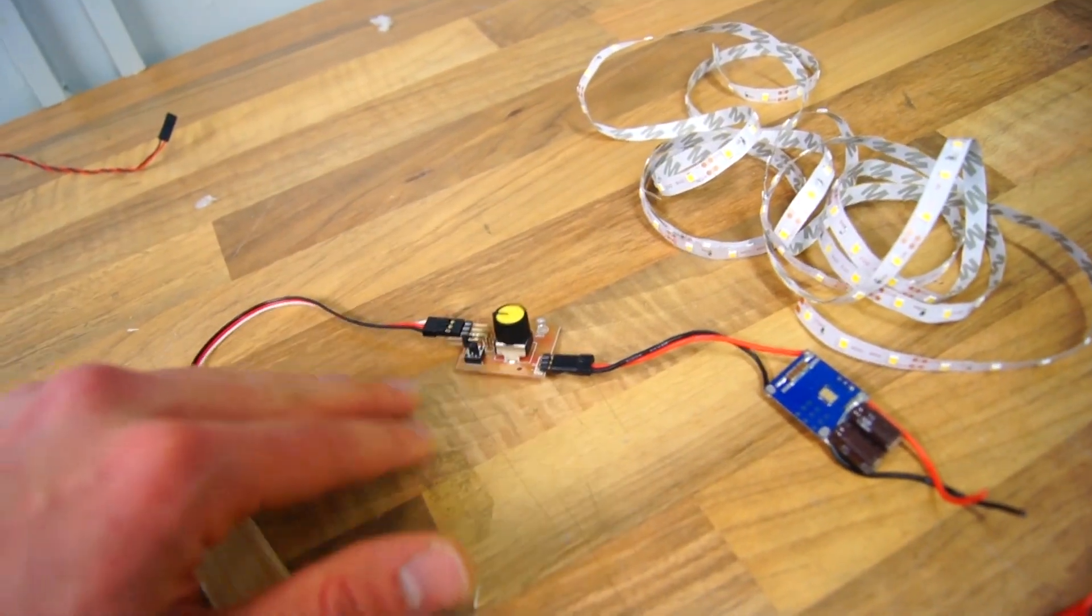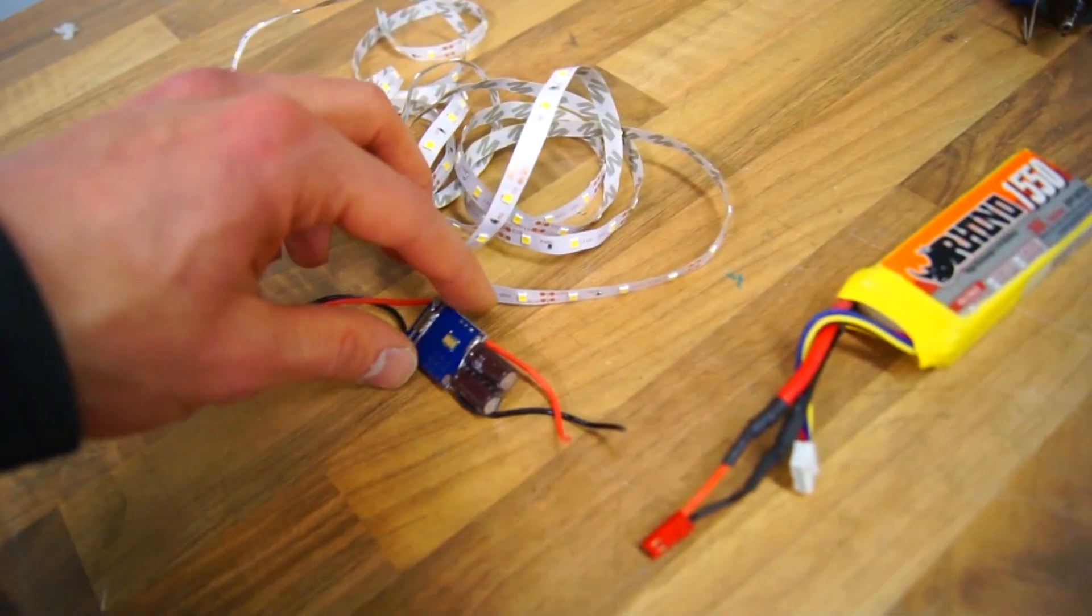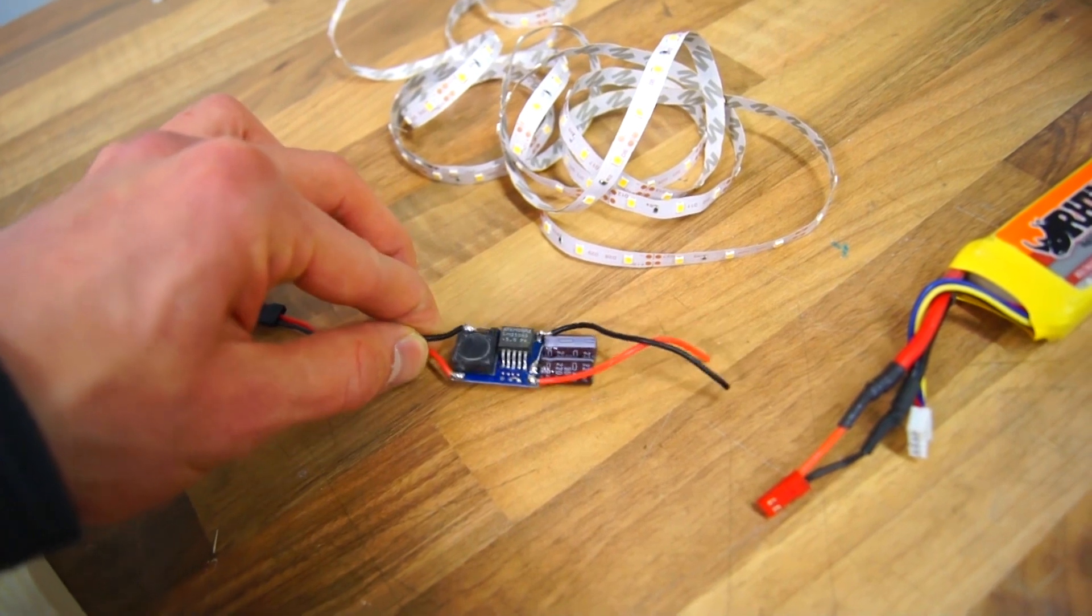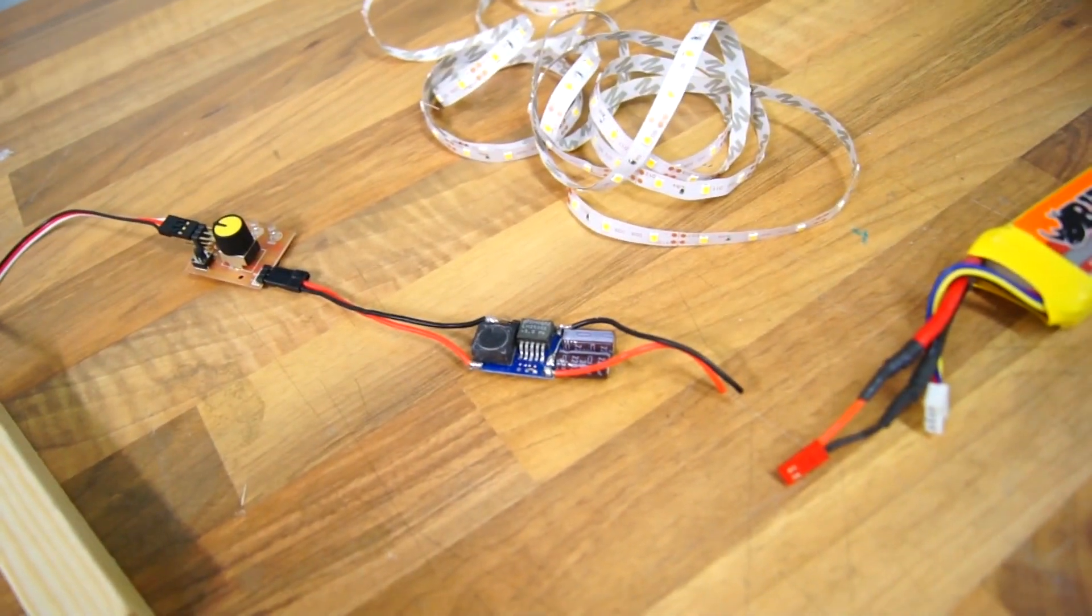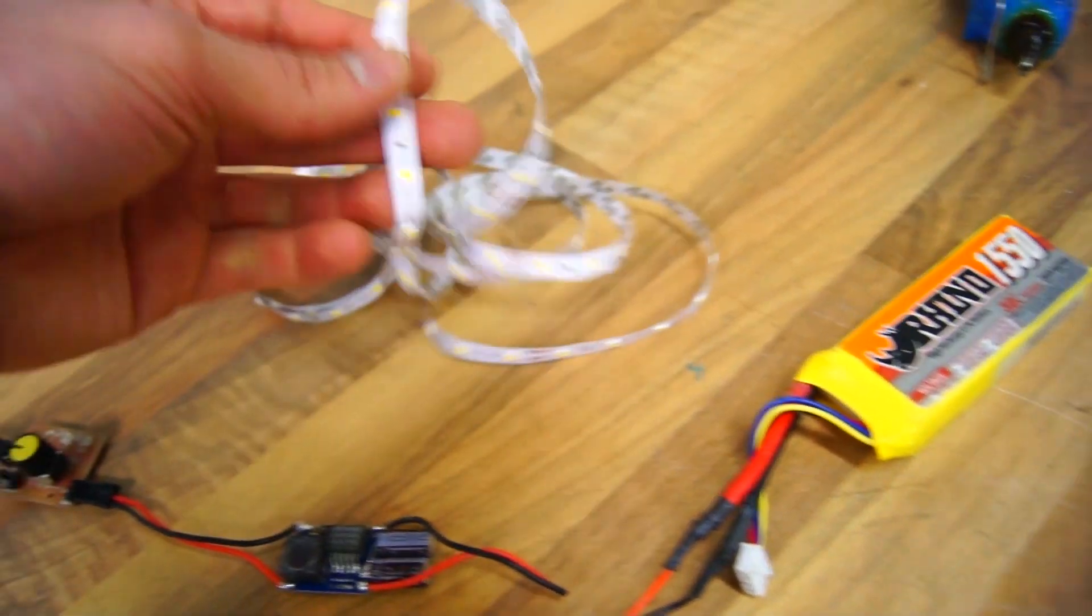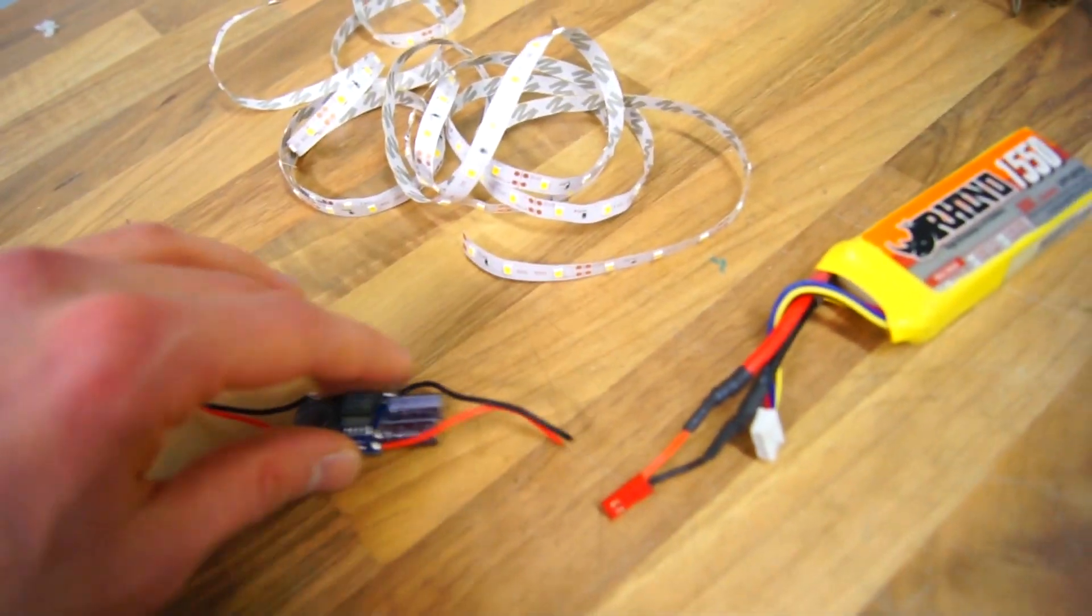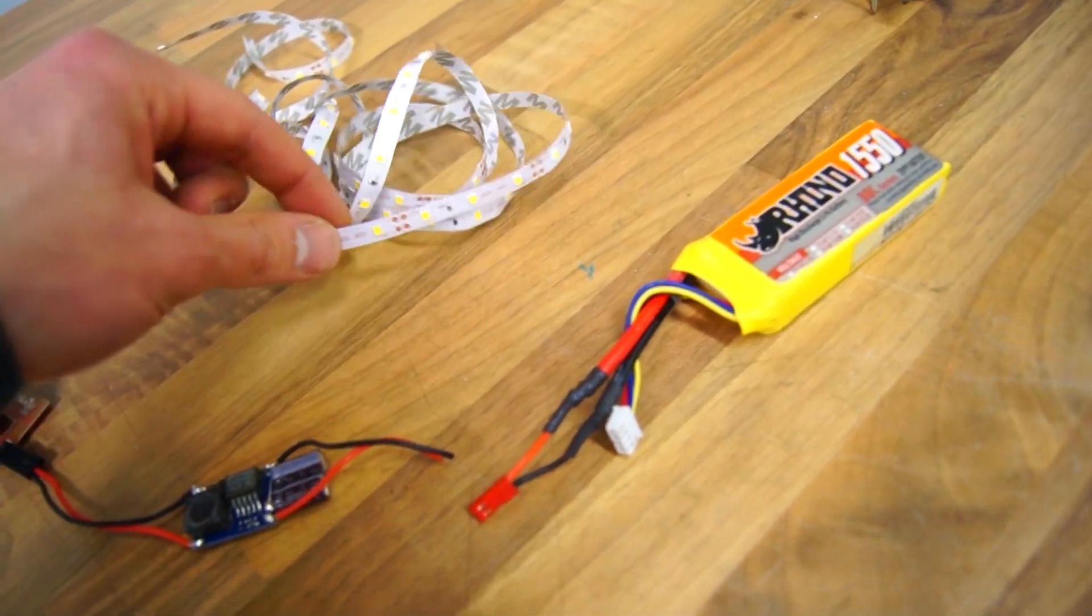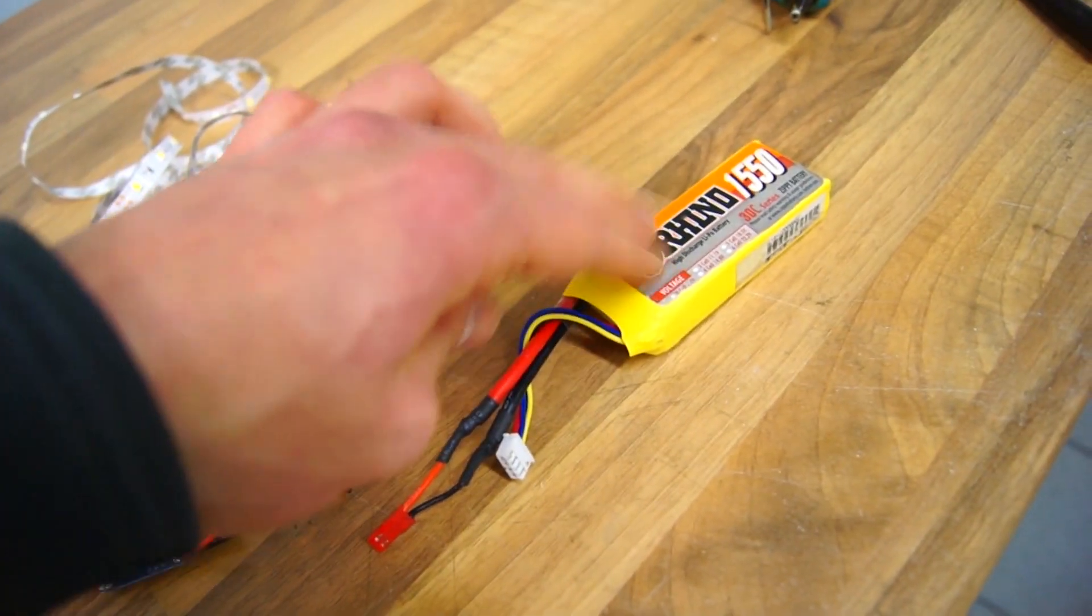The servo tester requires 5 volts and that's why we have this step down regulator also called a BEC and the BEC is connected to the battery but I also have some 12 volt LEDs. So what I'm going to do is a Y splitter so the LEDs is powered directly from the battery.